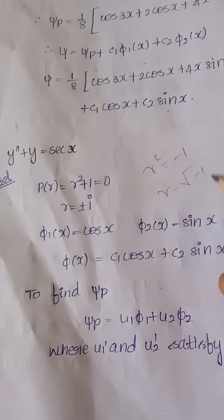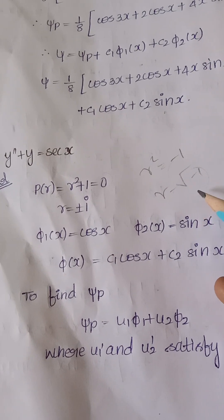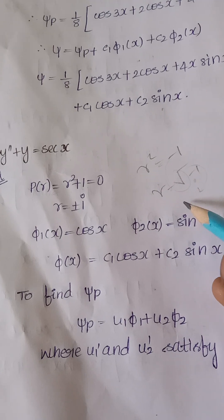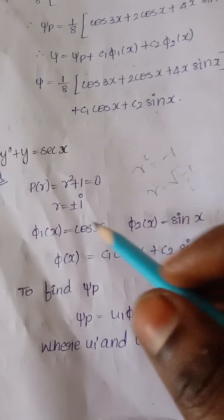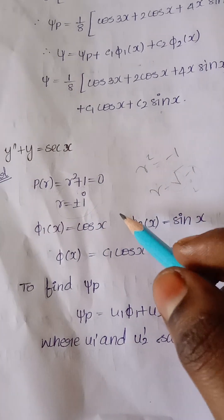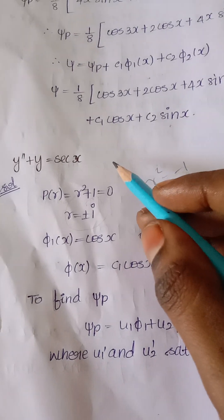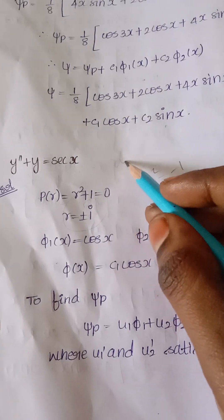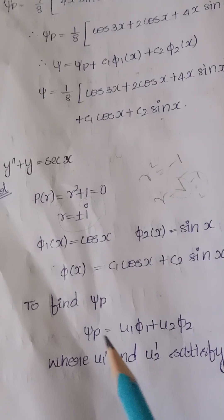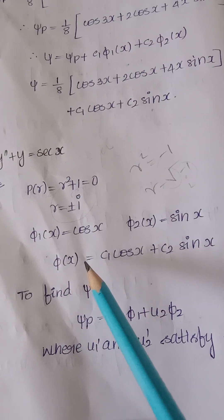Taking the root: r² = −1, so r = ±√(−1) = ±i. In complex form, this can be written as cos(x) ± i·sin(x).